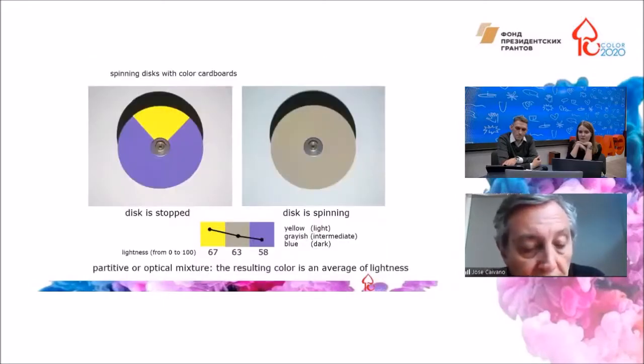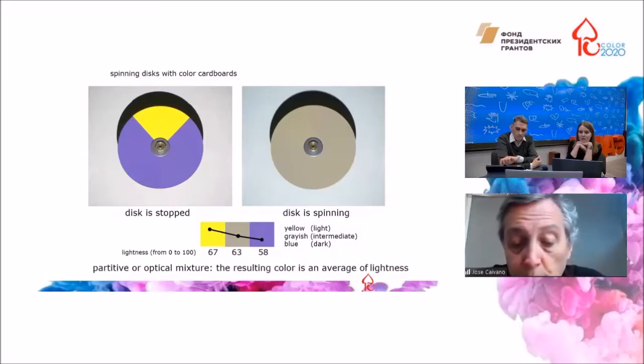Here we analyze an optical mixture using spinning disks with matte color papers. Yellow has 67% lightness and blue 58% lightness. And the resulting grayish color has an intermediate lightness of 63%, which is a kind of average.